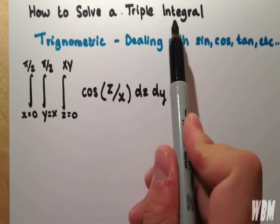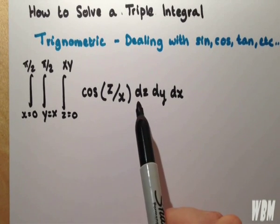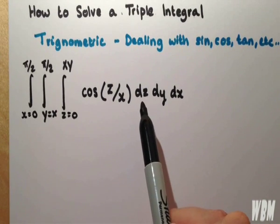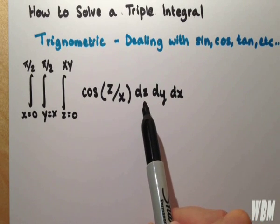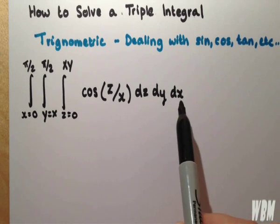So triple integral means we are integrating with respect to three different variables. Here we've got z, or z for you Americans, y, and x.